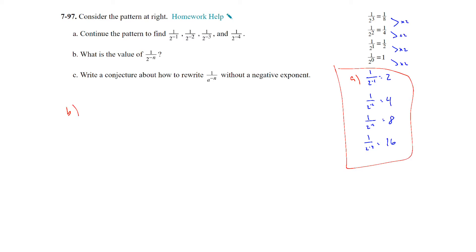Part B asks: what is the value of 1/2 to the negative n? If we're multiplying by 2 every time, for any power of negative n, look at the denominator — 2 to the negative 1, if that were positive 1, it would be 2; positive 2 gives 4; positive 3 gives 8. So we can rewrite 1/2^(−n) as simply 2^n. Part C: write a conjecture about 1/A^(−n) without negative exponents. It doesn't matter what the base is — 1/A^(−n) is equivalent to A^n.